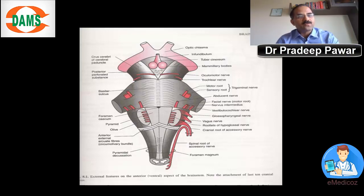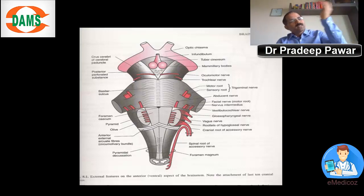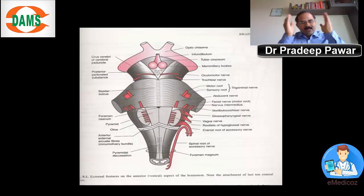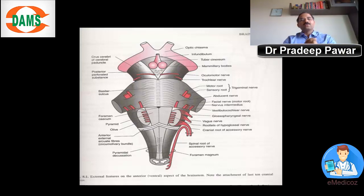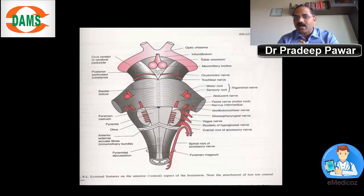How does the hypoglossal nerve get outside the skull? It enters a foramen named the hypoglossal canal, also known as the anterior condylar canal. Once it gets outside the skull, it lies right within the carotid sheath.